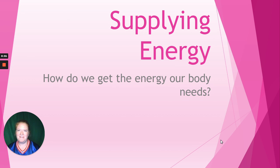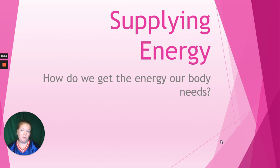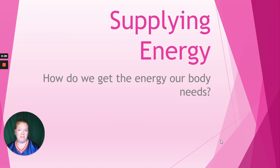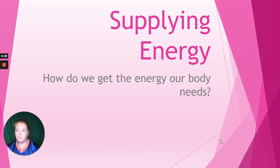We're ready for another lesson in the human body, and today's focus is on supplying energy. How do we get the energy our body needs? On a cellular level, we know we need glucose and oxygen in order for cellular respiration to occur and for ATP, or cellular energy, to be released. How do we get that stuff for the cells to be able to use? That's what we're going to talk about today.